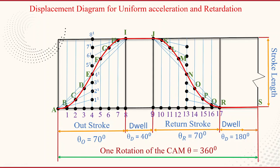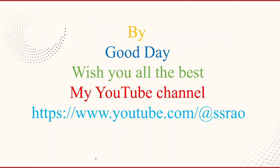At each point you can read the displacement of the follower — for example, at point 4 the displacement is 4 to 4 prime, at point 7 the displacement is 7 to H, and at point 11 the displacement is 11 to L. During the outstroke the follower moves up, and during the return stroke it moves down. This displacement diagram shows the follower displacement at different angles of cam rotation, which is required when constructing the cam profile.